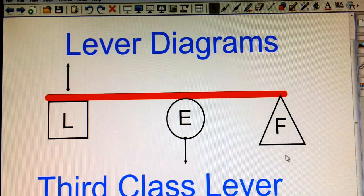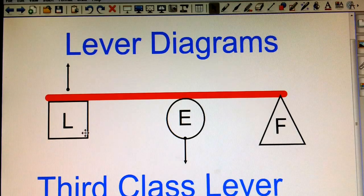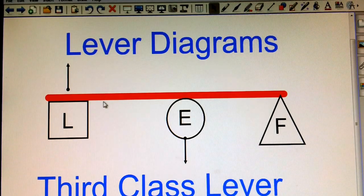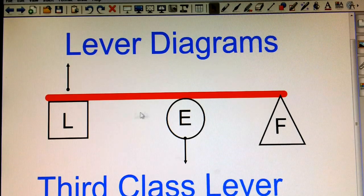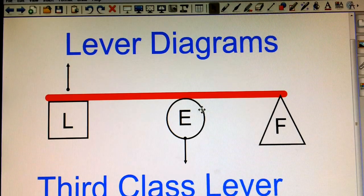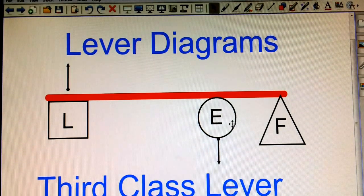So you'll notice the fulcrum is on one end, effort in the middle, effort is applied down, load still moves up. Again, just because you would turn it on its side, it doesn't change the fact that it would be a lever. And much like the first and the second class lever, these items could move closer or farther from.